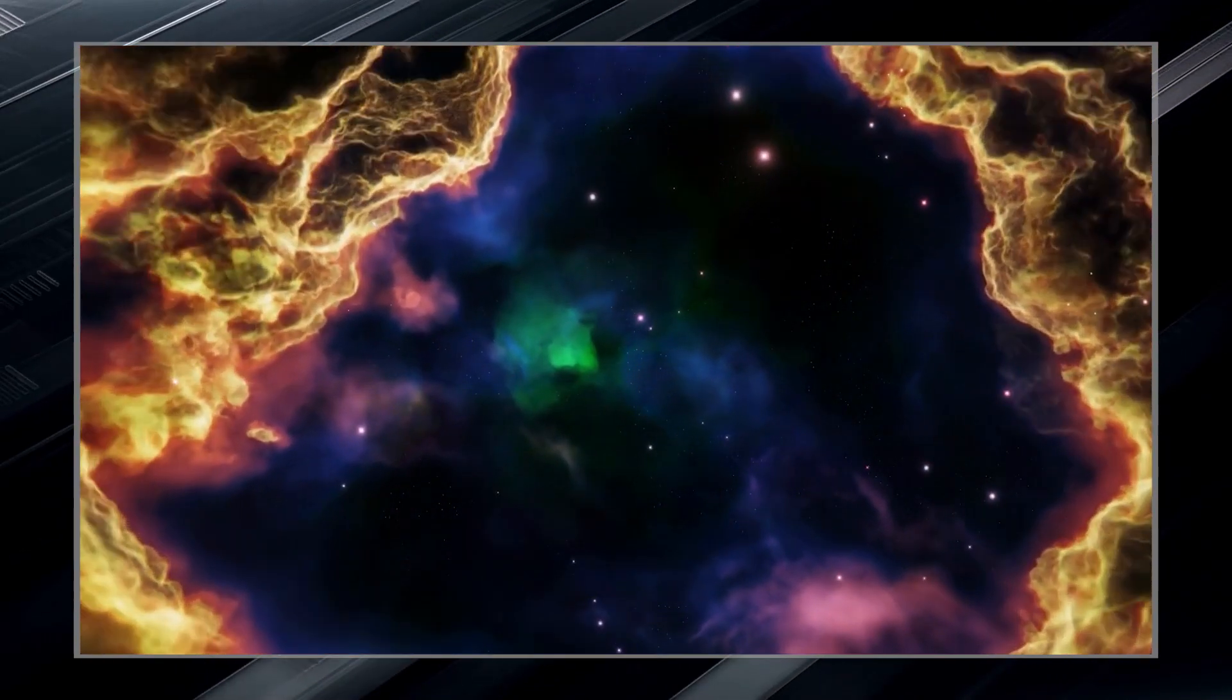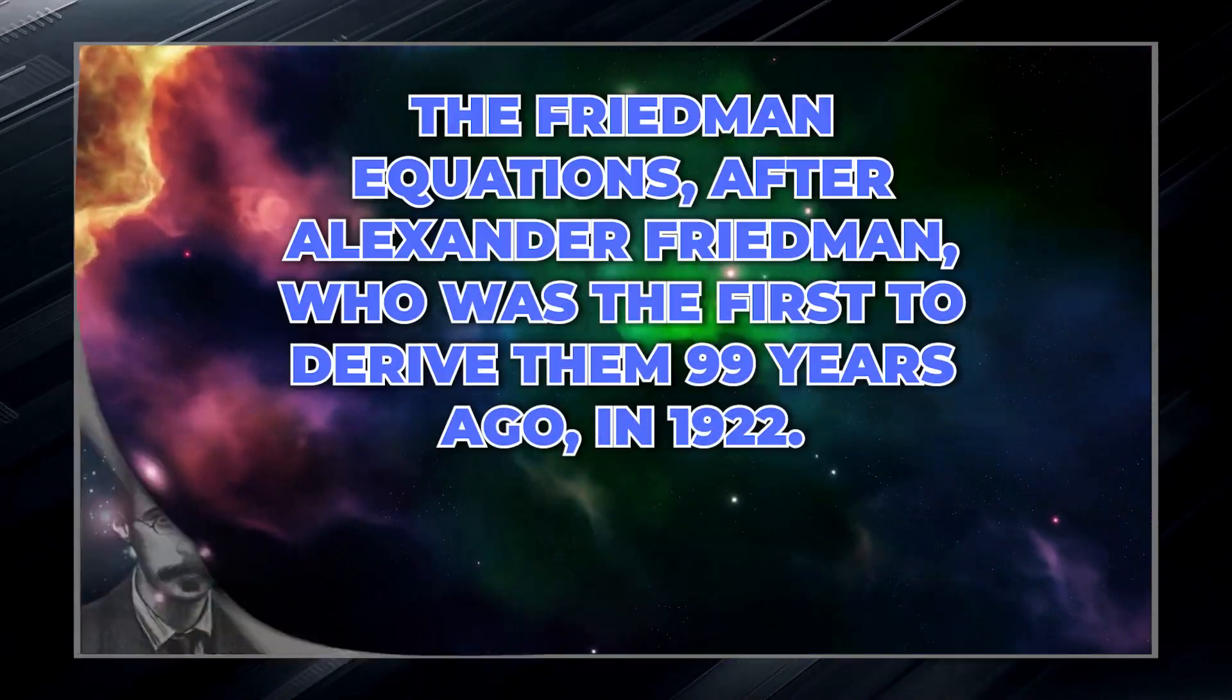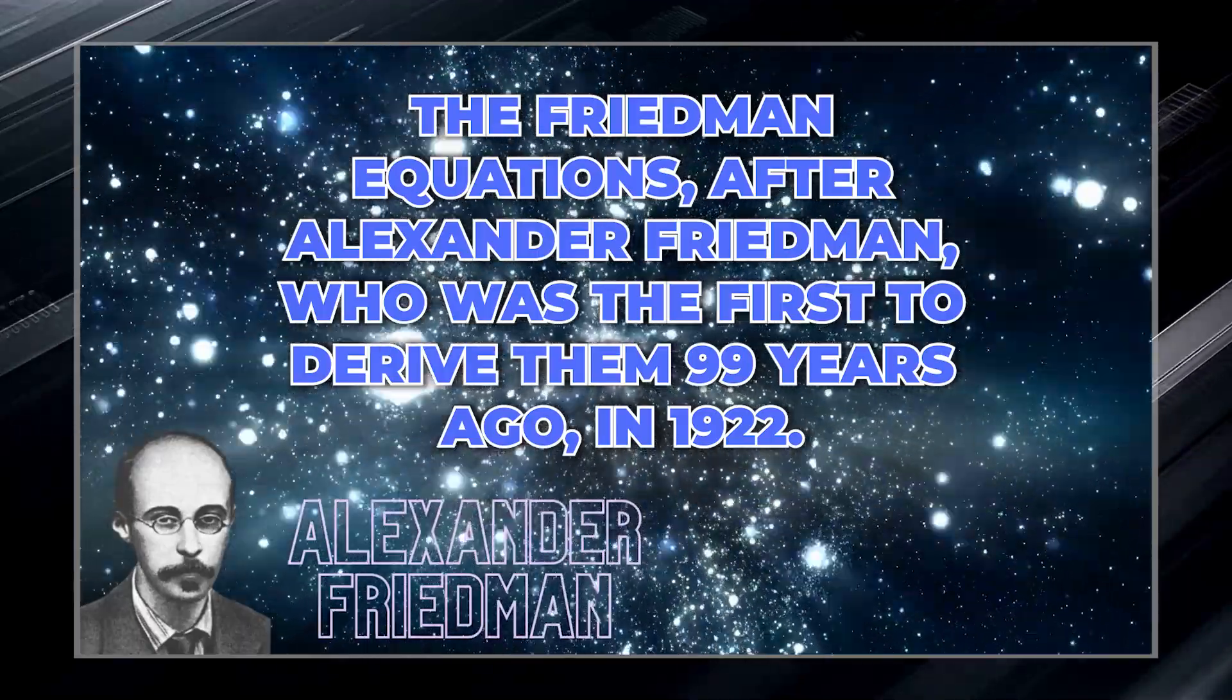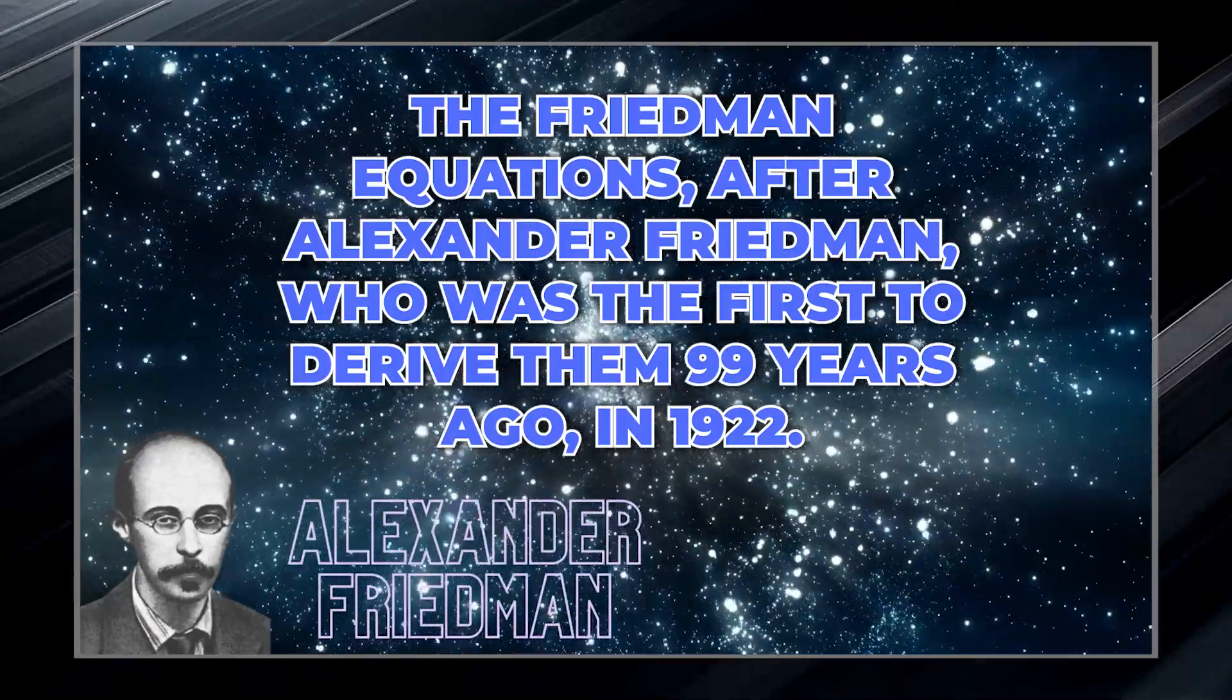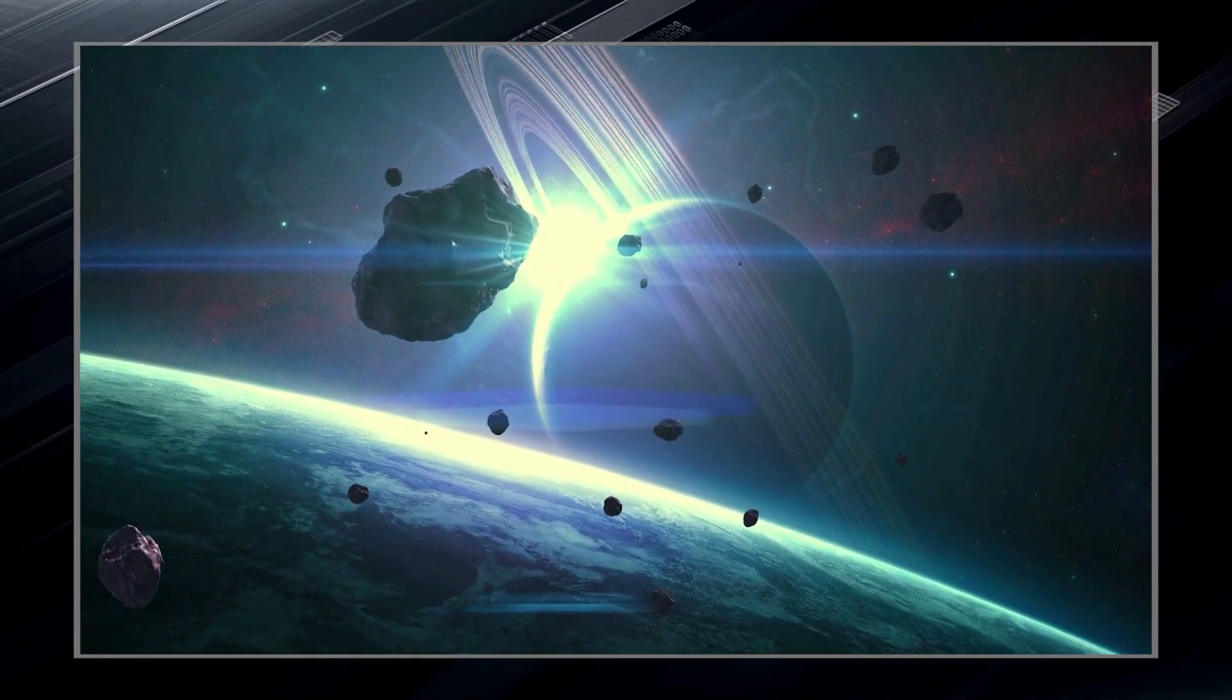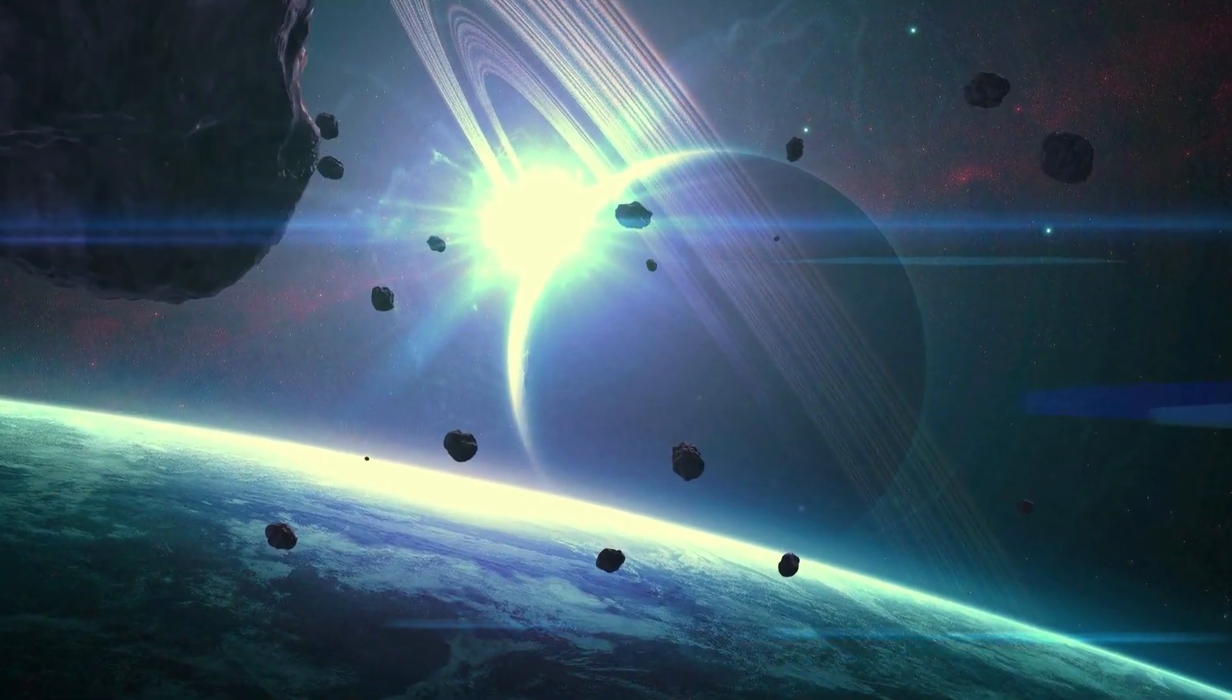The consequences of this resolution are known as the Friedmann equations, after Alexander Friedmann, who was the first to derive them 99 years ago in 1922. These equations tell us that a universe full of stuff must expand or contract in a particular way.